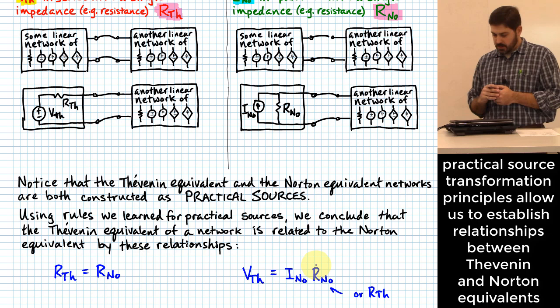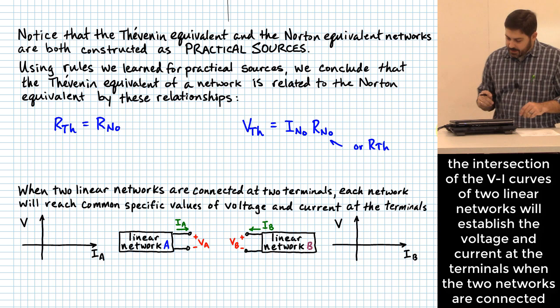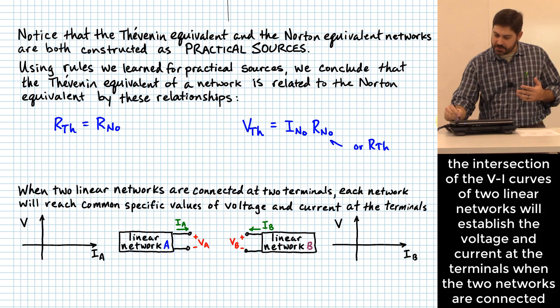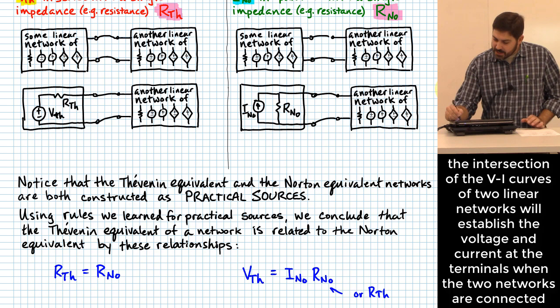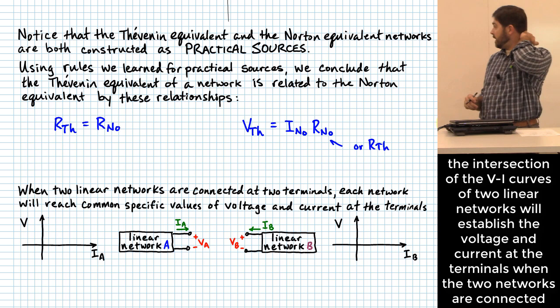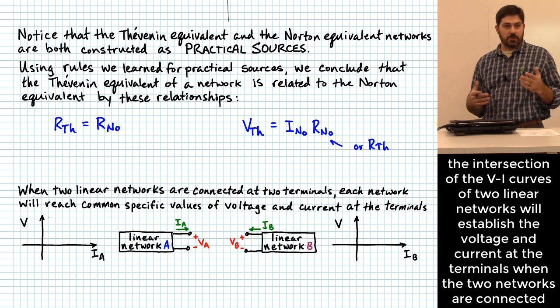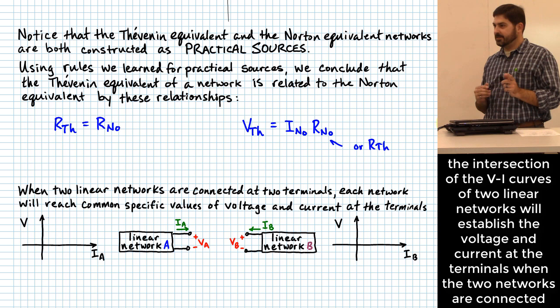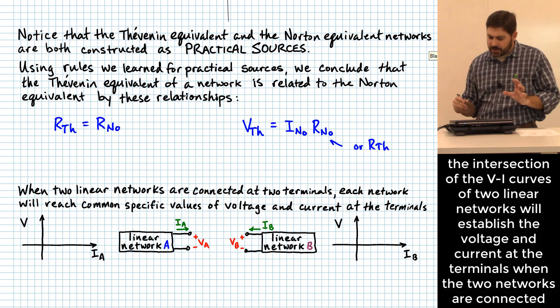When you have two different linear networks connected together, what the network on the right sees is no different if the left is replaced with a Thevenin equivalent. Let's draw a specific example: a practical voltage source with three volts and one ohm resistance as linear network A, and on the right, three ohms with one volt as linear network B.